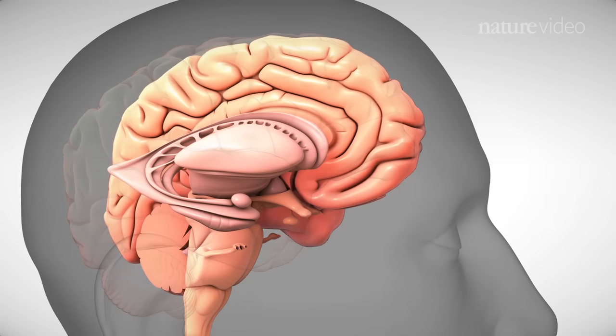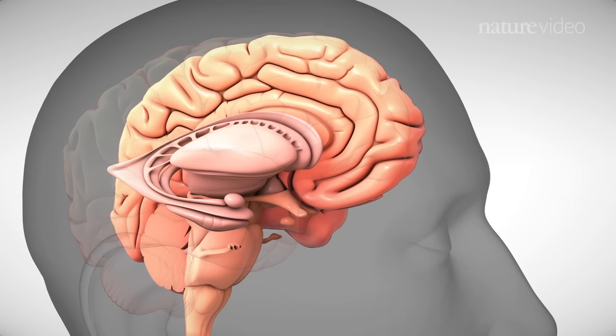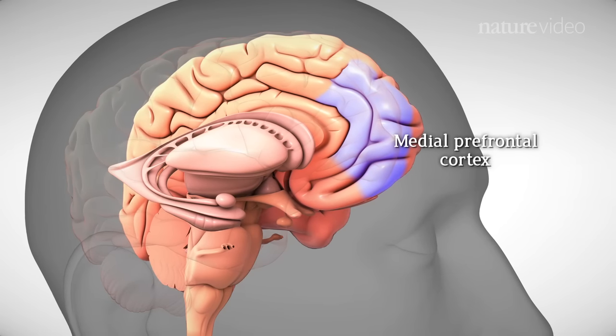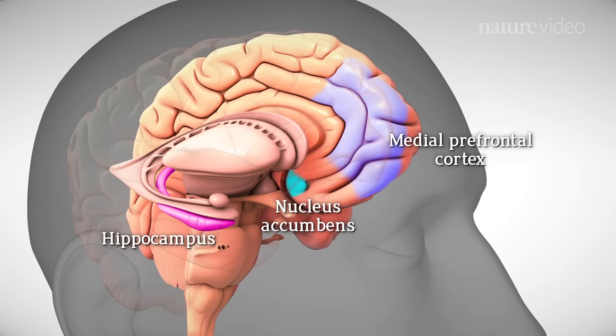In turn, the amygdala connects to a set of brain regions that hone the physiological and behavioral response to emotional stimuli. These areas include the medial prefrontal cortex, the nucleus accumbens, the hippocampus and the insula.